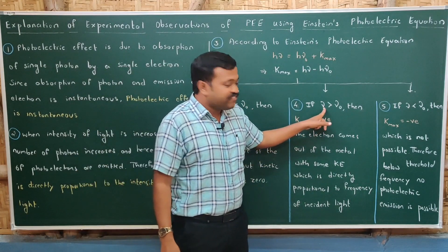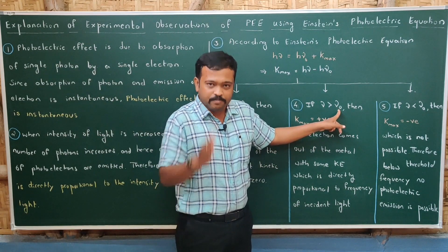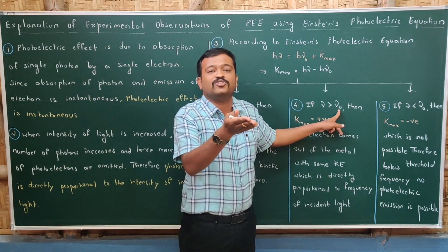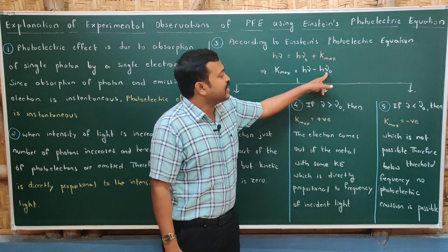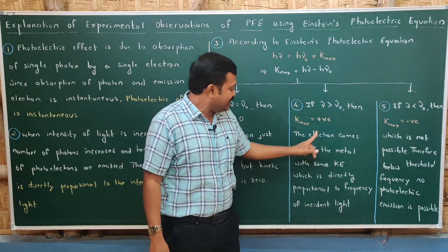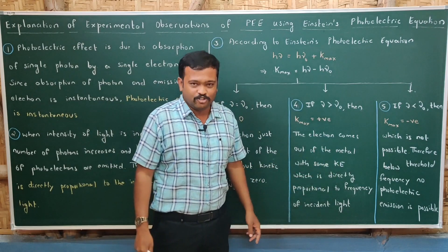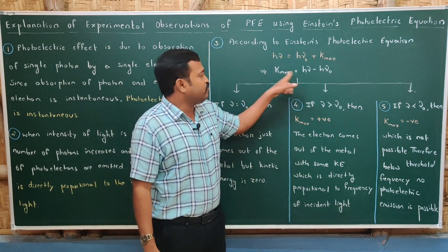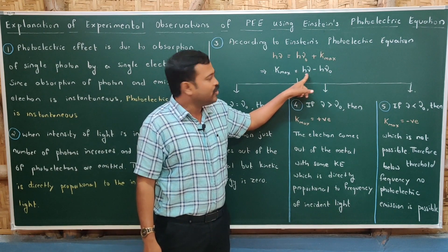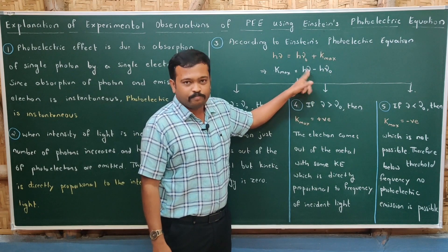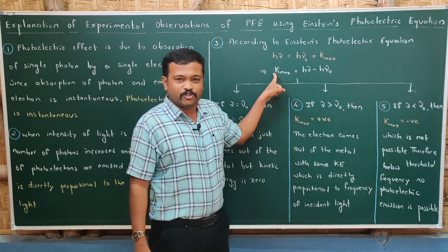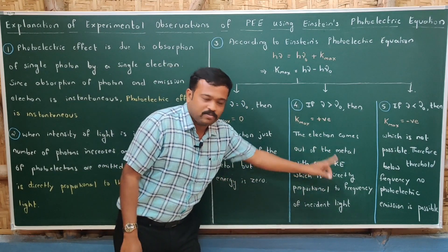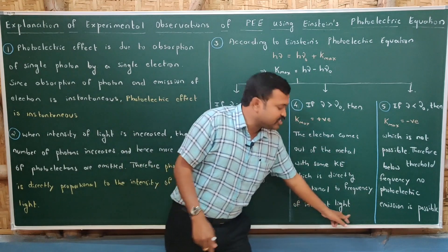In the second case, if the frequency of incident light is greater than the threshold frequency, the energy of the photon is greater than the work function. The electron comes out and moves further, meaning K_max is positive. The electron comes out with some kinetic energy. From K_max = hν − hν₀, since h and ν₀ are constants, the maximum kinetic energy of the photoelectron is directly proportional to the frequency of the incident light.